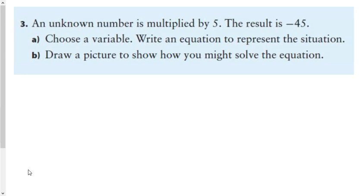We start at question 3. If an unknown number is multiplied by 5 and the result is negative 45, choose a variable. If it says an unknown number, typically we'd use X. But what other variable would be appropriate? N. Even though all of you probably used X, I'm going to use N only because it represents a number.